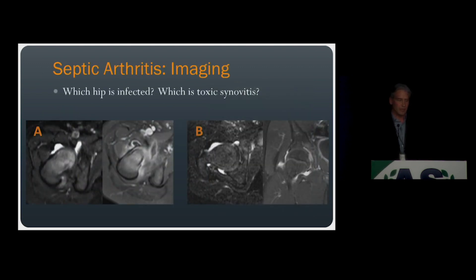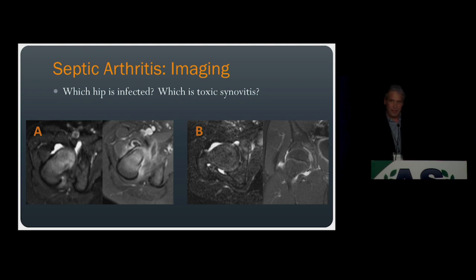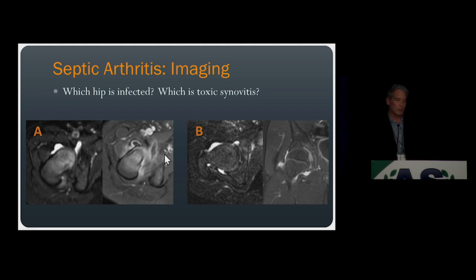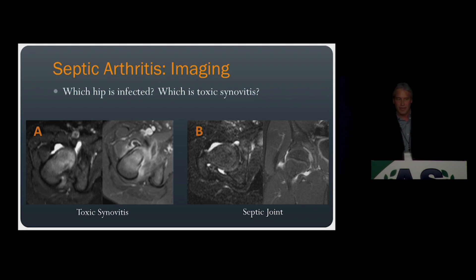Now let's move on to septic arthritis with a little quiz. Two patients present with a right hip joint effusion — one has septic arthritis, the other has a reactive joint effusion from toxic synovitis. They look very similar. Both have a moderate hip joint effusion. Patient A has a little soft tissue inflammation around the hip joint; patient B does not have periarticular inflammation. Patient A's marrow looks a little increased, but that's just residual red marrow. Patient A had benign toxic synovitis, while patient B had septic arthritis, even though their only finding was a joint effusion.